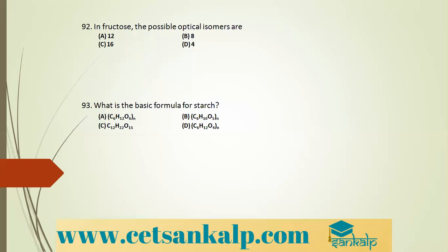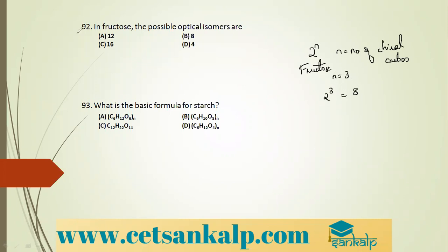Q: Optical isomers of fructose. The formula is 2^n where n = number of chiral carbons. Fructose has 3 chiral carbons, so 2^3 = 8 optical isomers are possible. Q: Basic formula of starch is (C6H10O5)n, and starch on reduction gives glucose, since starch is made up of large numbers of glucose units.